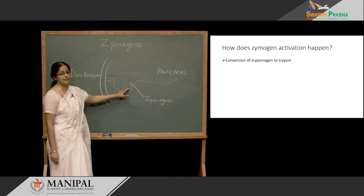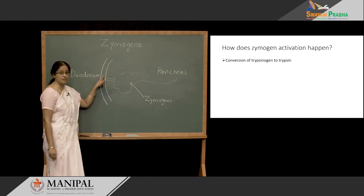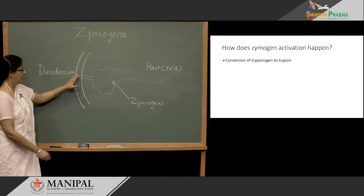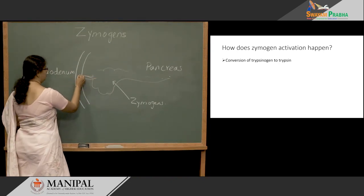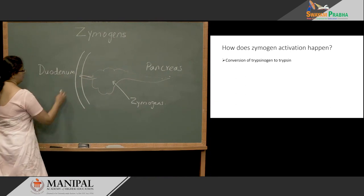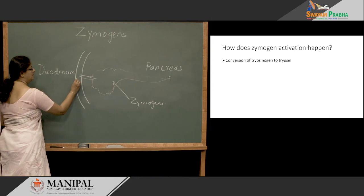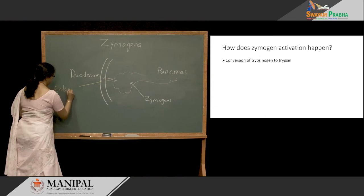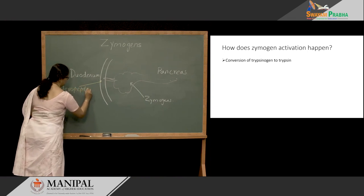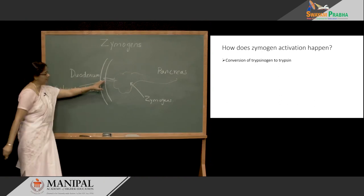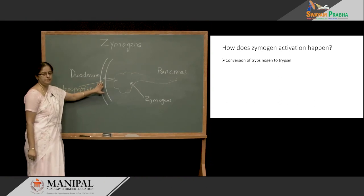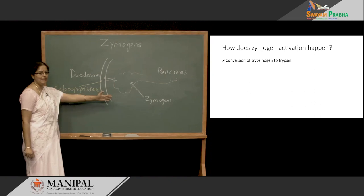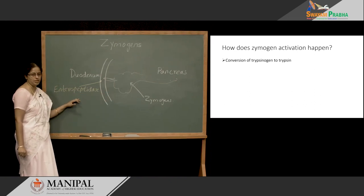They are synthesized and stored in the pancreas as Zymogen forms. Once the chyme enters the duodenum, these Zymogens are released into the duodenum. On the surface of the mucosal cells of the duodenum, we have an enzyme called enteropeptidase. Once the Zymogens reach the lumen of the duodenum, enteropeptidase activates all these Zymogens directly or indirectly.